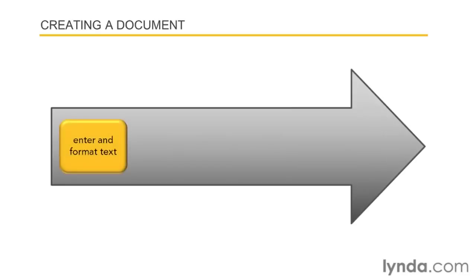When users create documents, they often start by entering and formatting text — perhaps entering then formatting, or entering and formatting some text, then entering and formatting additional text. These two activities go together. When all or most of the text has been entered, users begin adding illustrations to their document. They might, for example, include a chart or a picture, or add other shapes or decorative elements to illustrate the text.